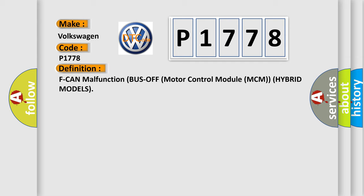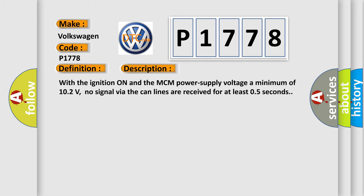And now this is a short description of this DTC code. With the ignition on and the MCM power supply voltage a minimum of 102 volts, no signal via the can lines are received for at least 0.5 seconds.